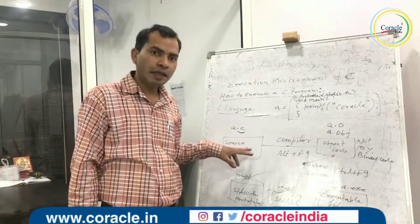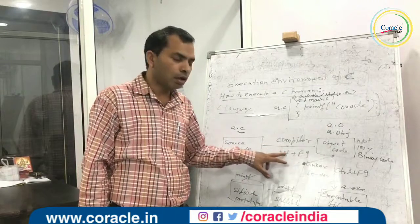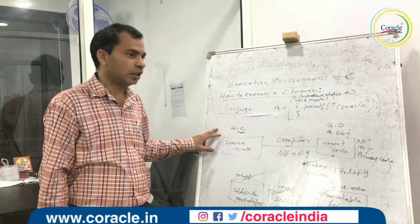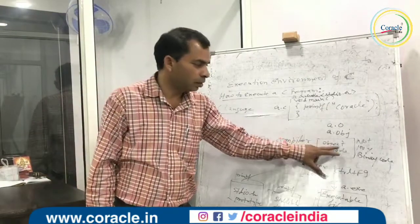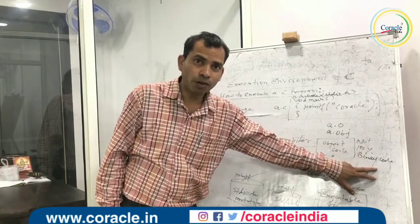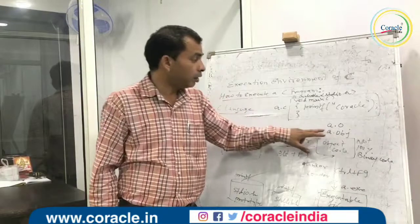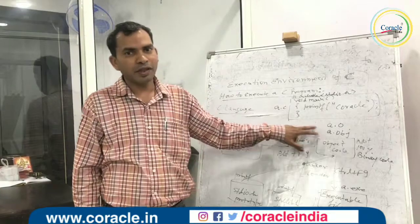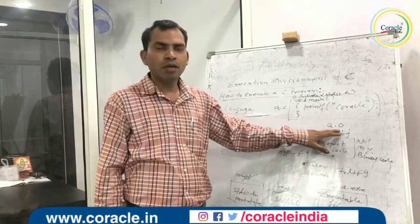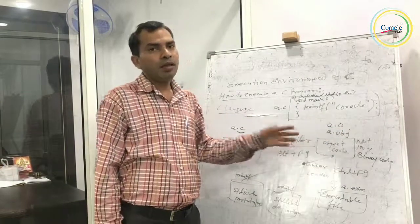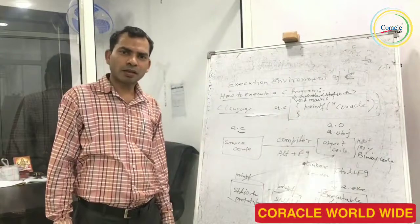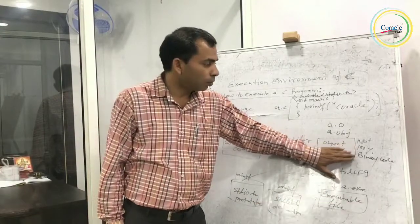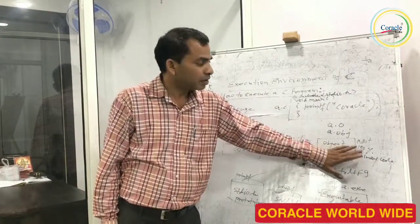So when we compile the source code of C using Alt+F9, the compiler becomes activated and converts the a.c file into another file known as the object code, which is not 100% binary code — it is not the final output file. If we are on a Unix operating system, the object code extension may be a.o; on Windows, it may be a.obj. So the first step is the object code being generated.